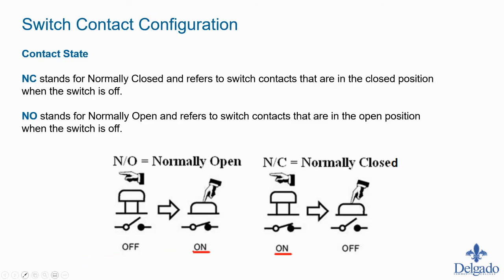Now let's look at some common terminology used extensively throughout the class: contact state, and the terms NC and NO. NC stands for normally closed and NO stands for normally open — referring to the contact state when the device is in its off or 'shelf state,' meaning it's not being activated or actuated. If the contact is open in the shelf state, it's a normally open contact. If the contact is closed in the shelf state, it's a normally closed contact.